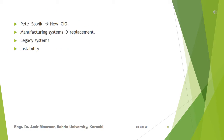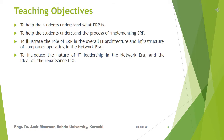Pete Solvik came to Cisco in 1993 as the new CIO. Upon arriving, he was faced with manufacturing systems that were unstable and needed replacement. He initially hoped to replace the suite of legacy systems at a slower, more deliberate rate. However, the instability of the company's systems were an obstacle to sustaining the rapid growth of the company. Thus, Pete and his fellow managers aggressively attacked the problem with an ERP approach, which is described in the case.